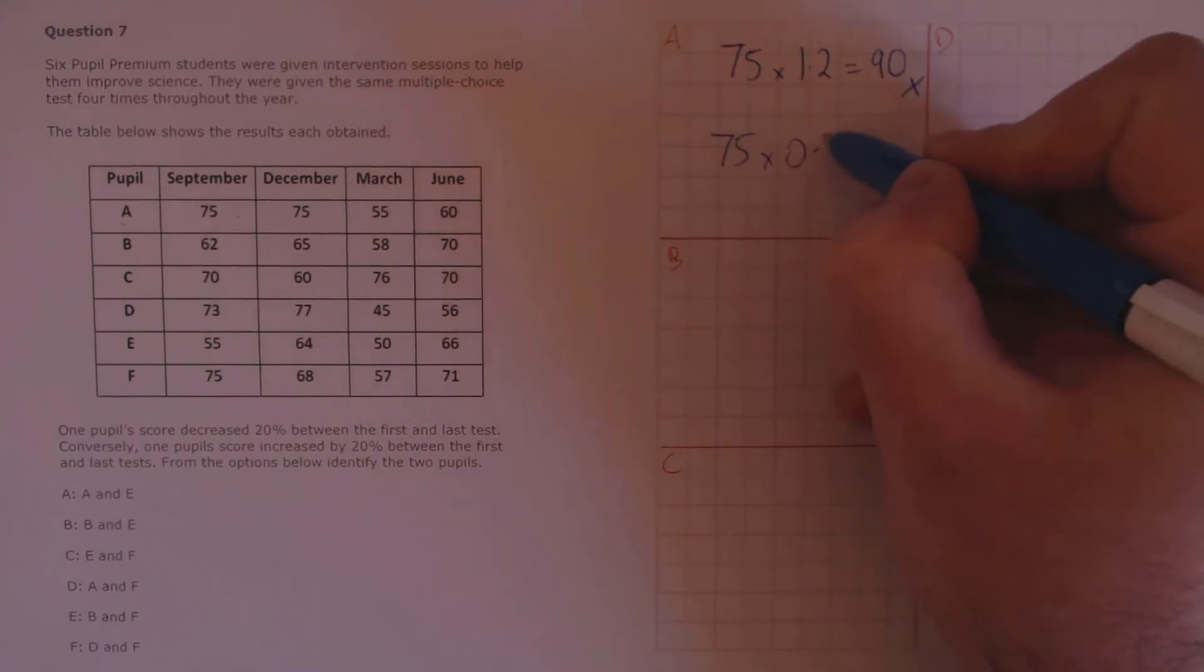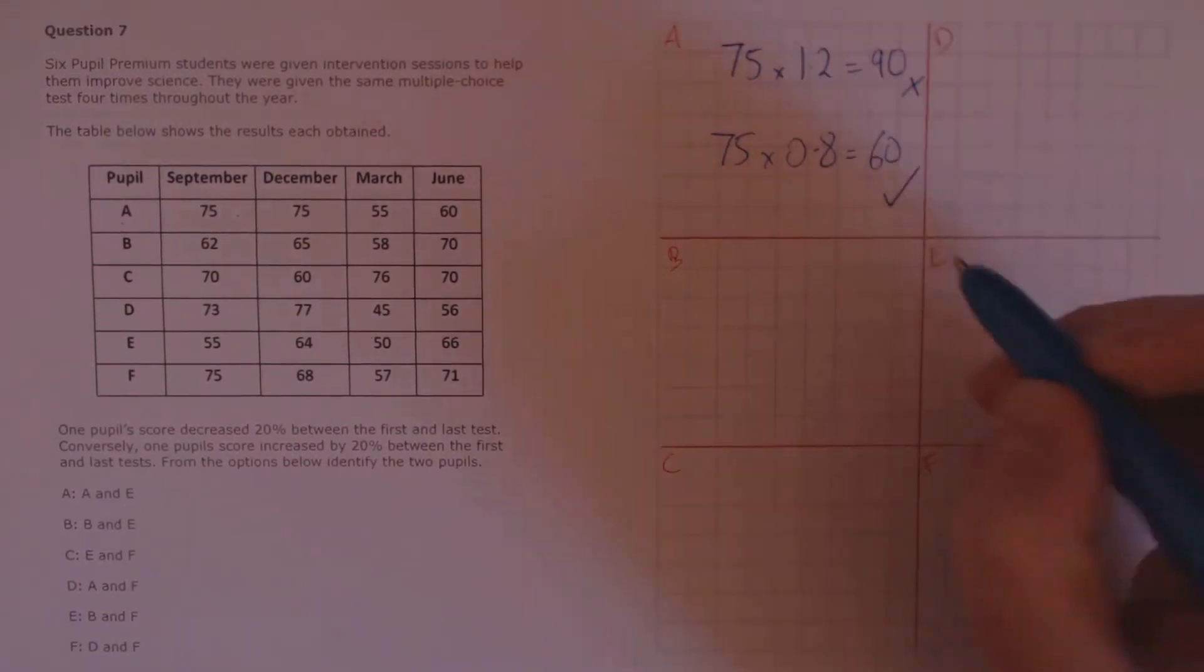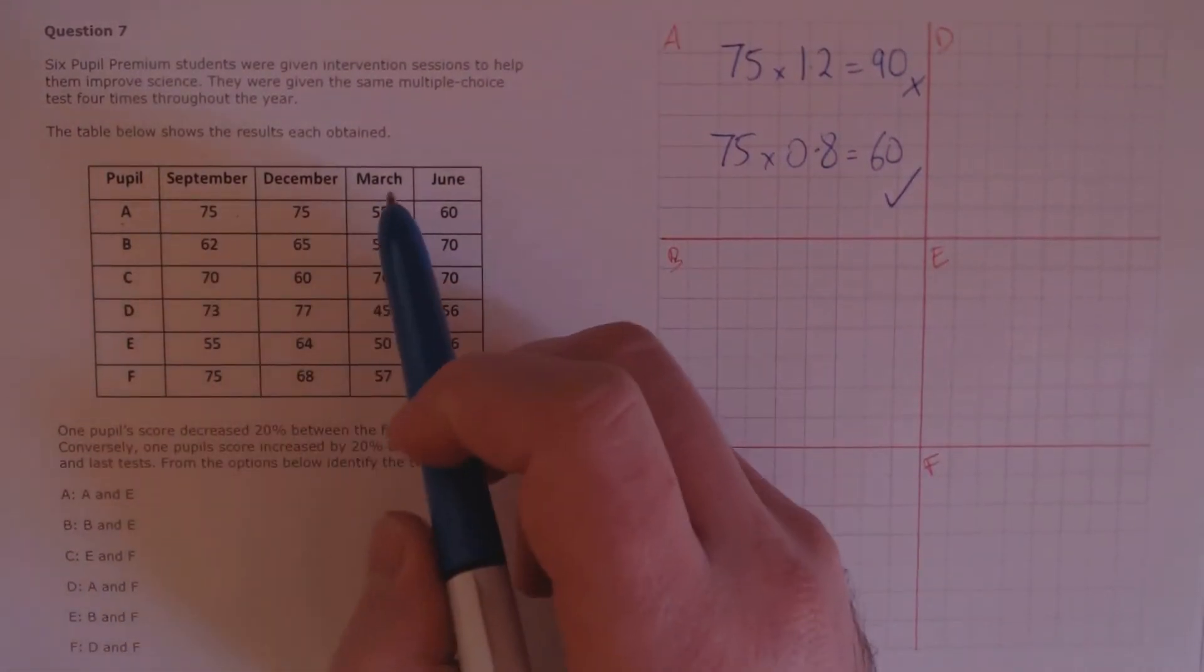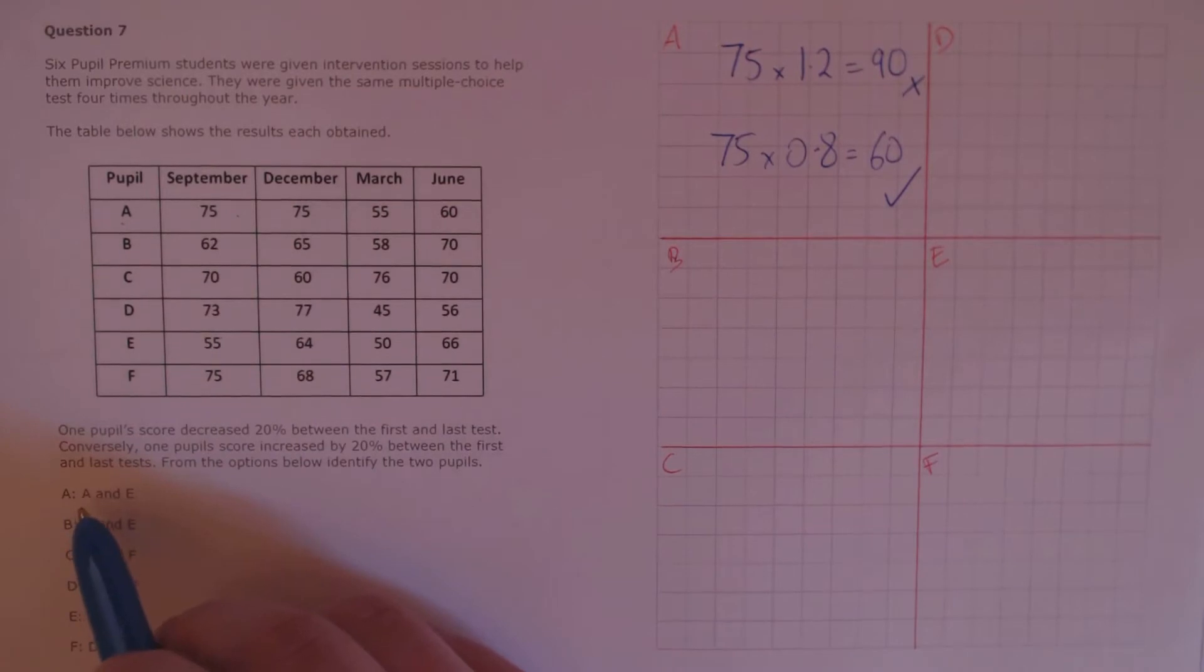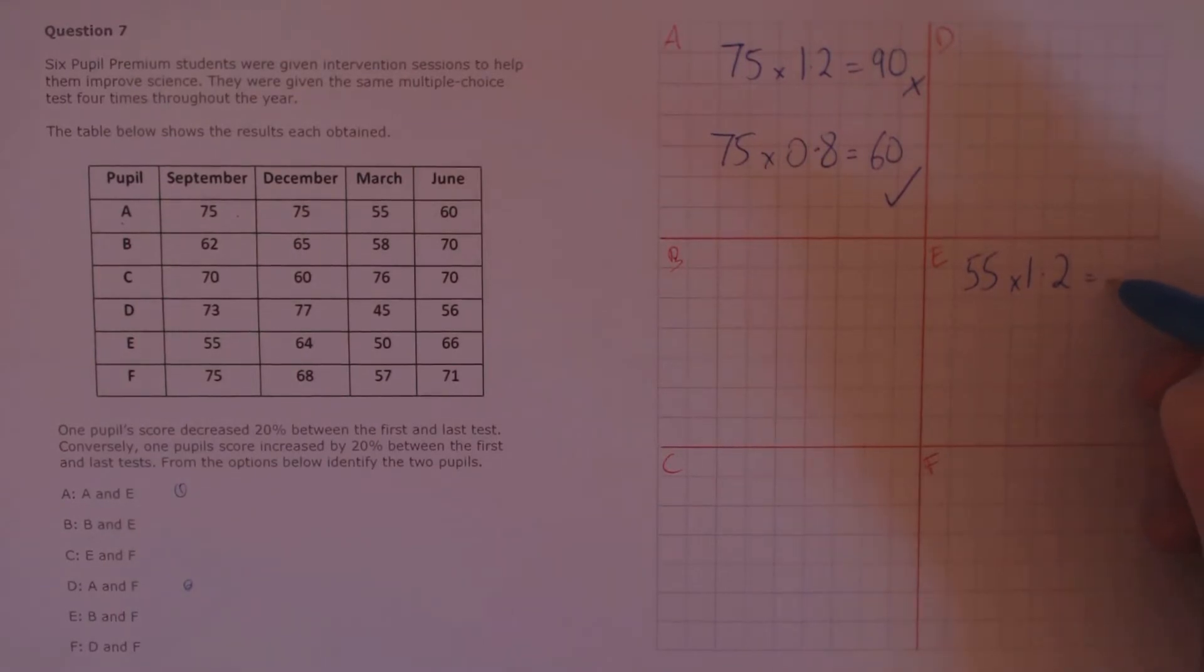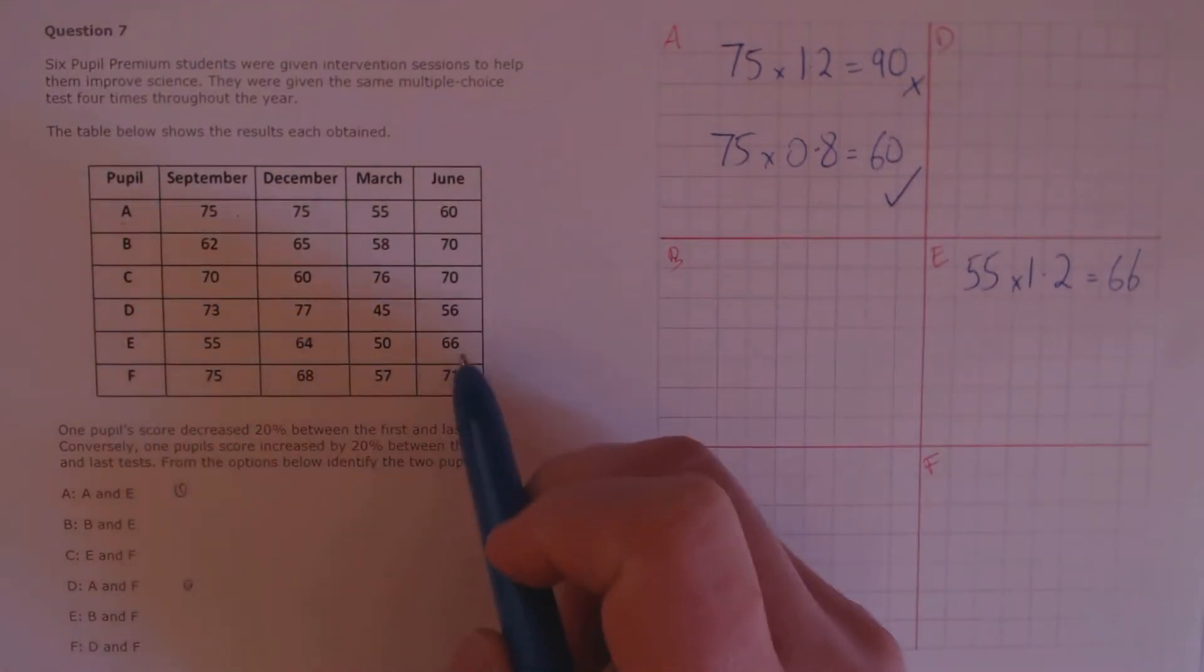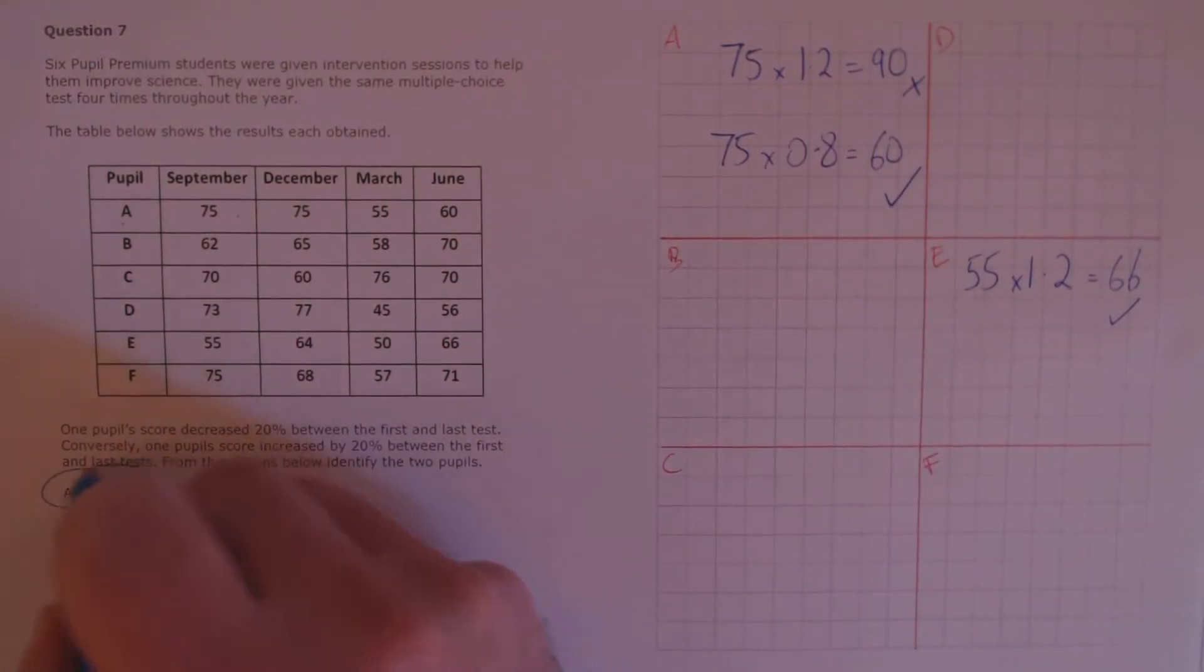75 times 0.8 is a decrease of 20%, which is 60. So, this pupil is the one who had a decrease of 60%. If we look at the answers, we know that A is the one with the decrease, so either answer A or answer D are our potential options. So, let's have a look at pupil E and pupil F in turn. So, pupil E has a mark of 55 in September, it's multiplied by 1.2, and that's 66, which is the same as their mark in June. So, that's the pupil with the increase. So, our final answer is A and E.